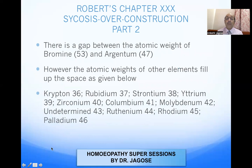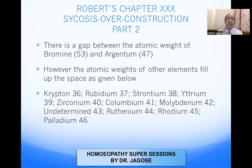There is a gap between the atomic weight of bromine (53) and argentum (47). However, the atomic weights of other elements fill up the spaces: krypton 36, rubidium 37, strontium 38, yttrium 39, zirconium 40, niobium 41, molybdenum 42, undetermined 43, ruthenium 44, rhodium 45, and palladium 46.